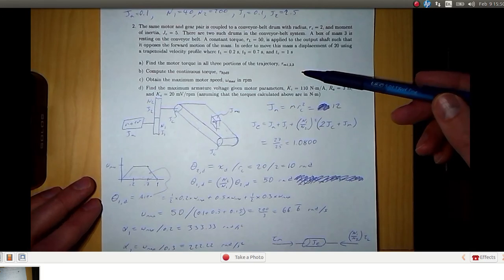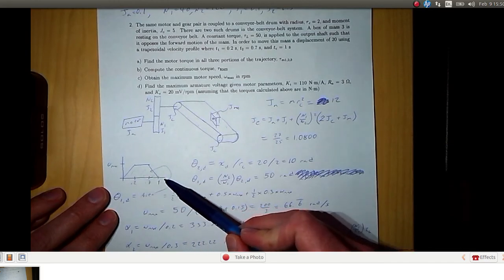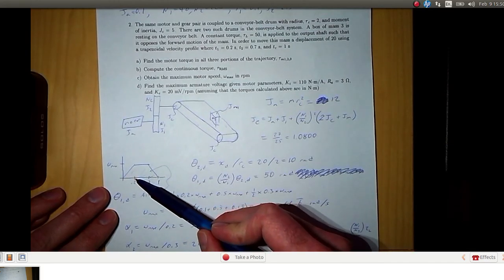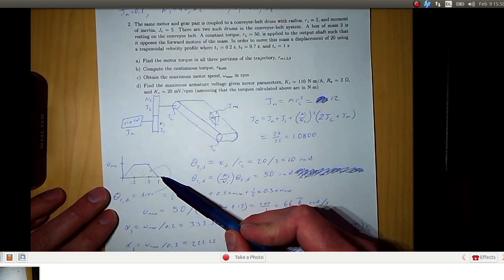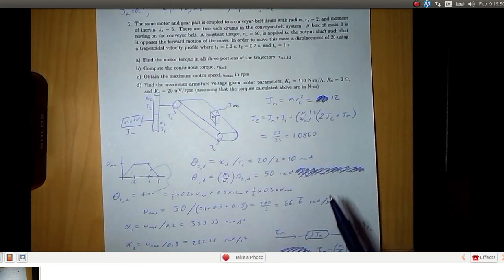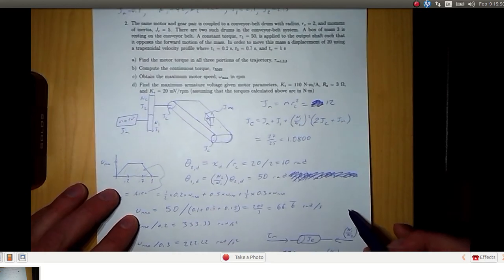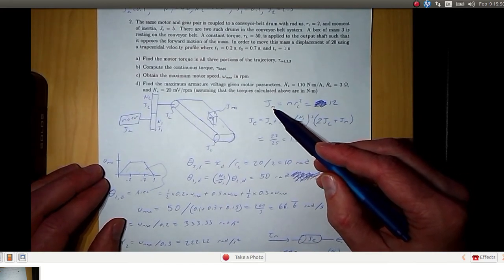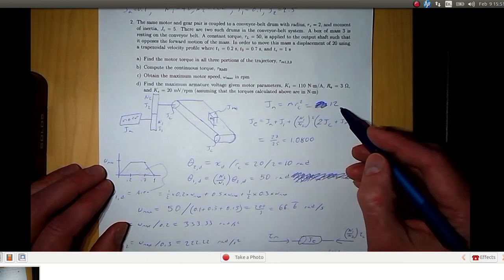Now we are going to start out by finding the motor torque for all three parts of this trapezoidal velocity profile. We're given that the total motion takes one second. We accelerate for 0.2 seconds, stay at constant velocity for 0.5, and then decelerate in 0.3 seconds. So first of all, let's find the equivalent system where we have the motor torque acting on an equivalent moment of inertia and then a torque that's resisting that motion. The moment of inertia from the box on the conveyor belt is m times r squared, where r is the radius of the drum, so that ends up being 12.